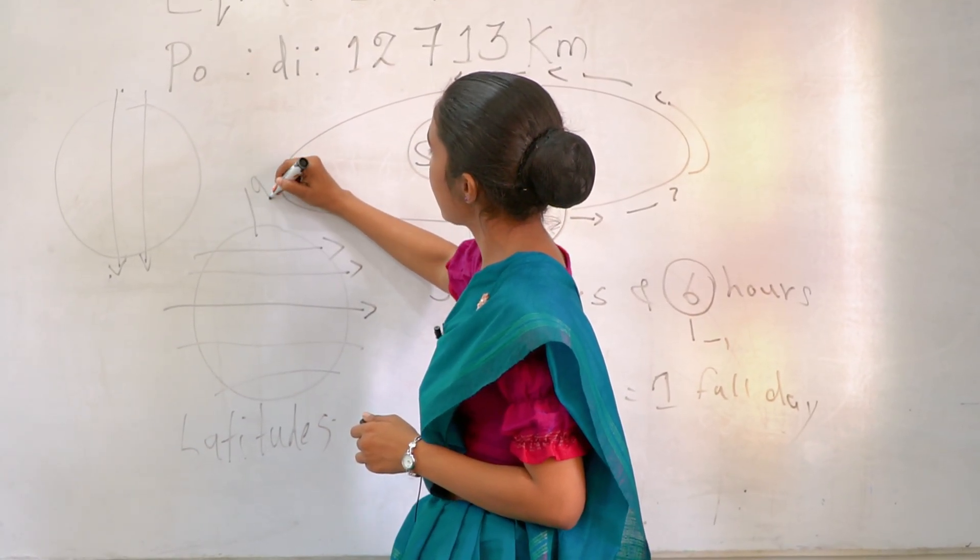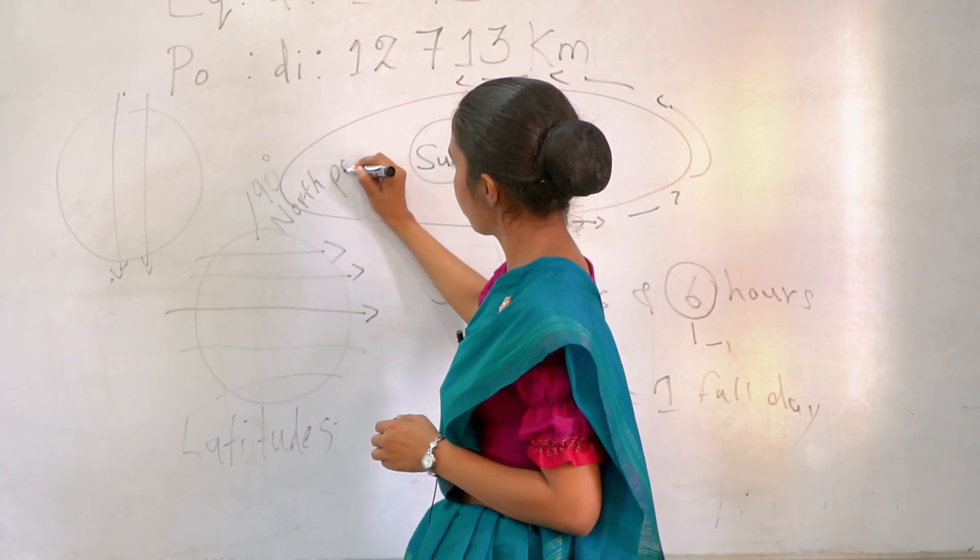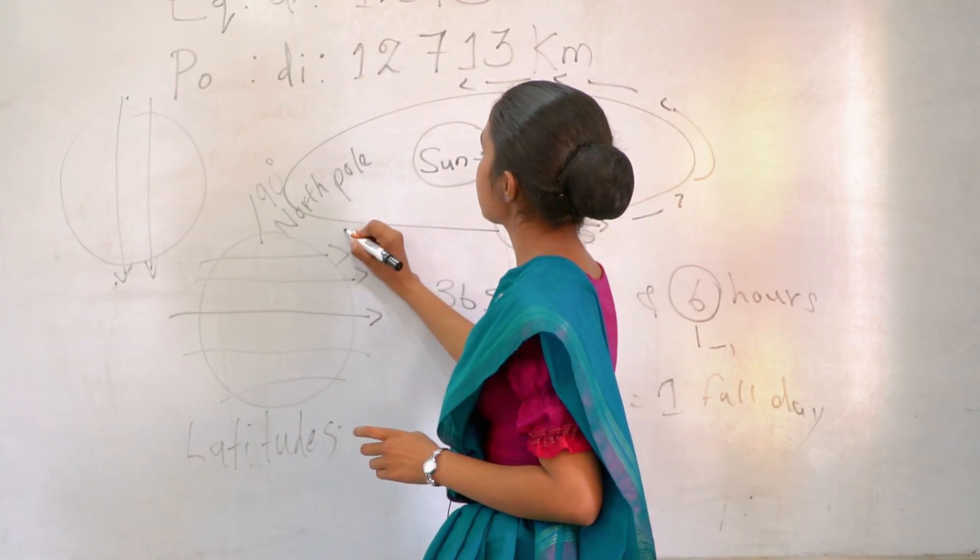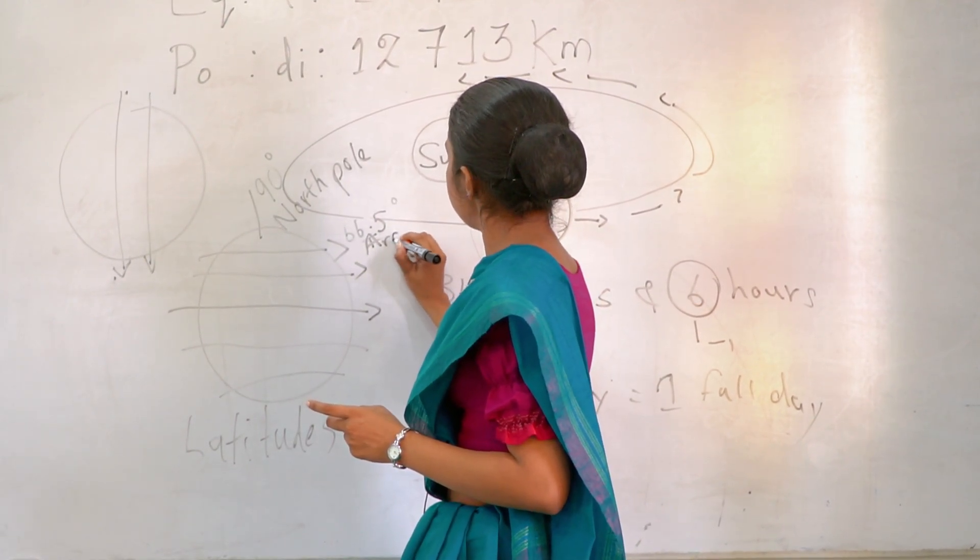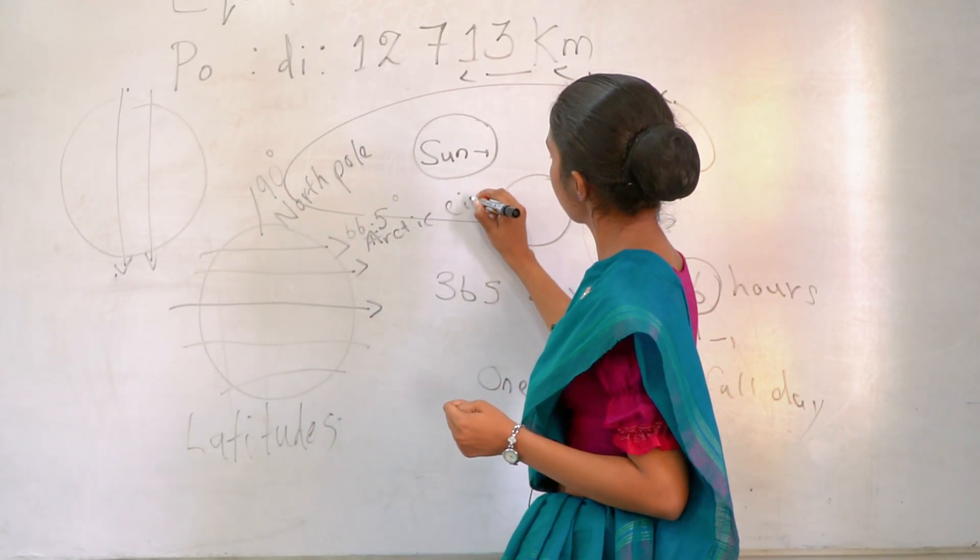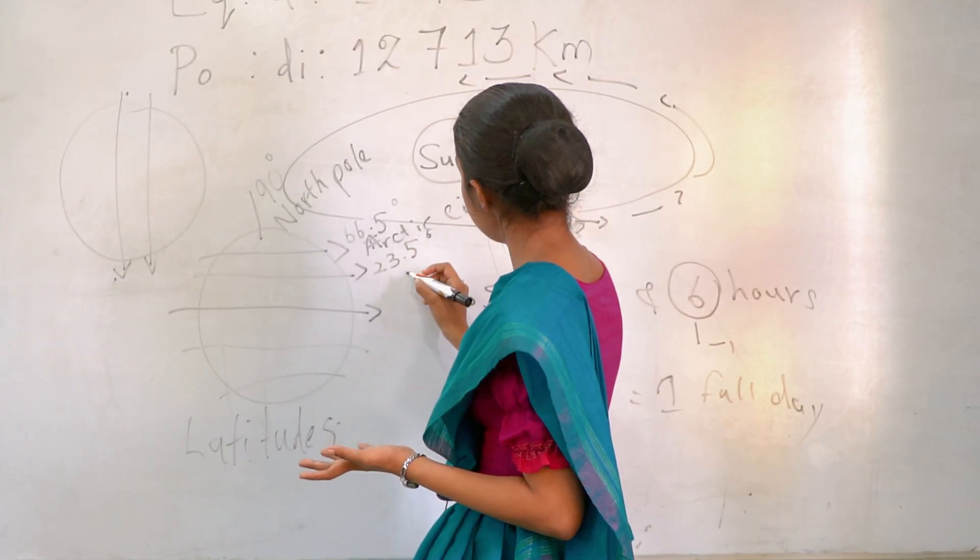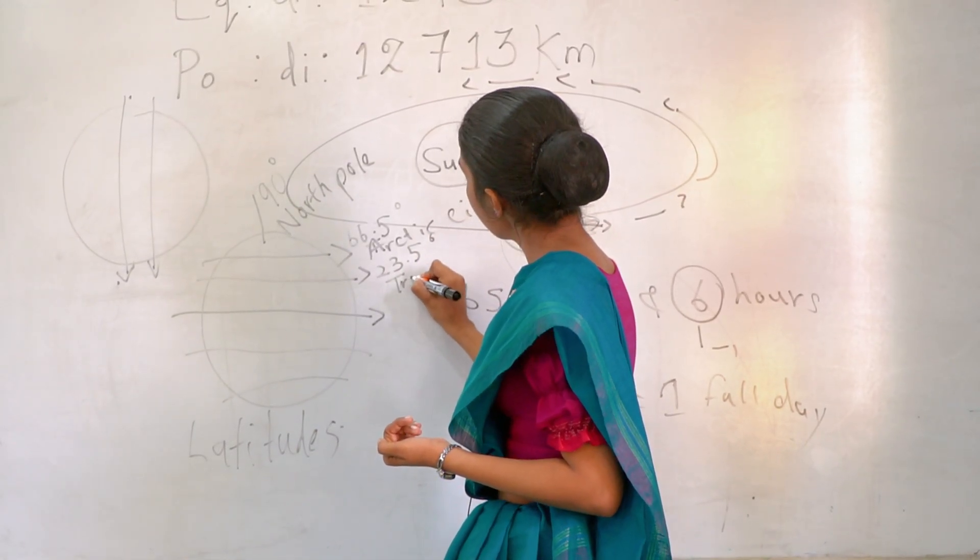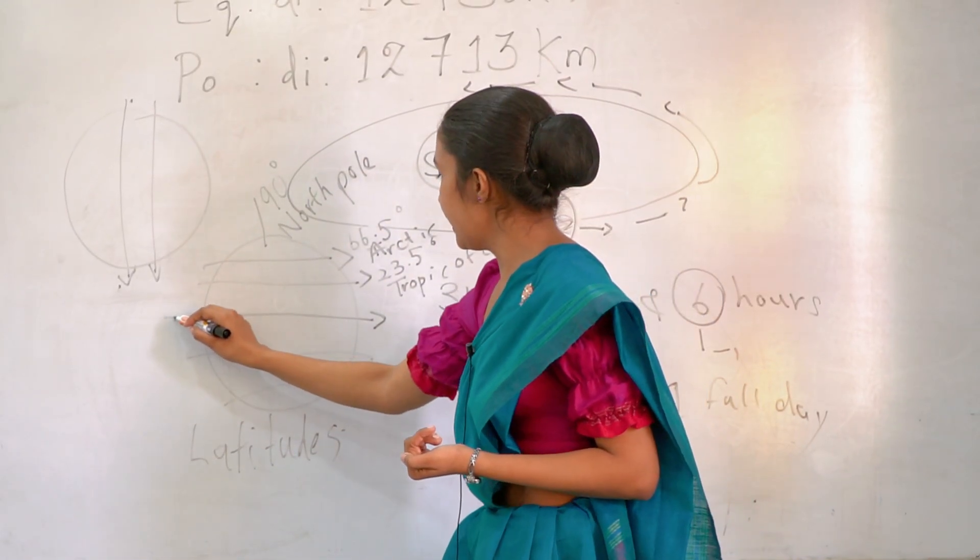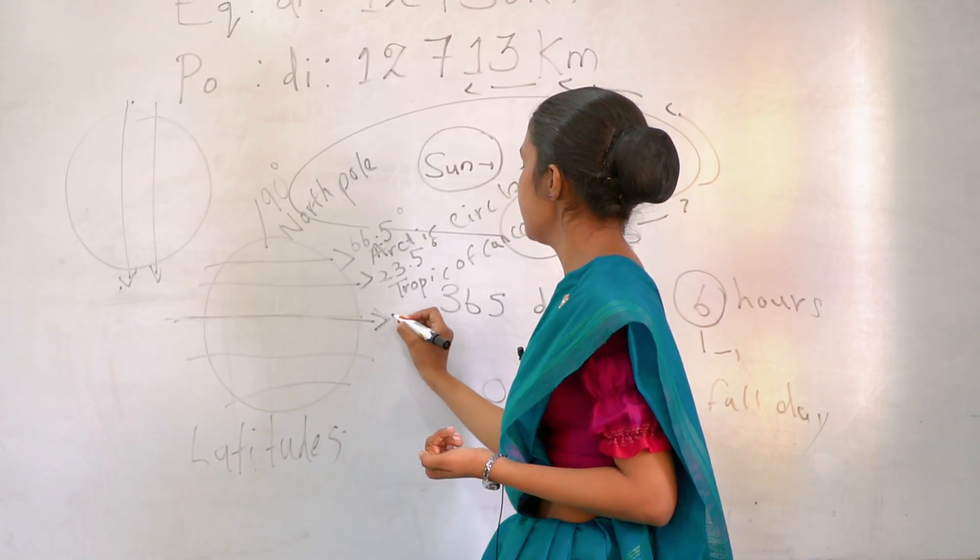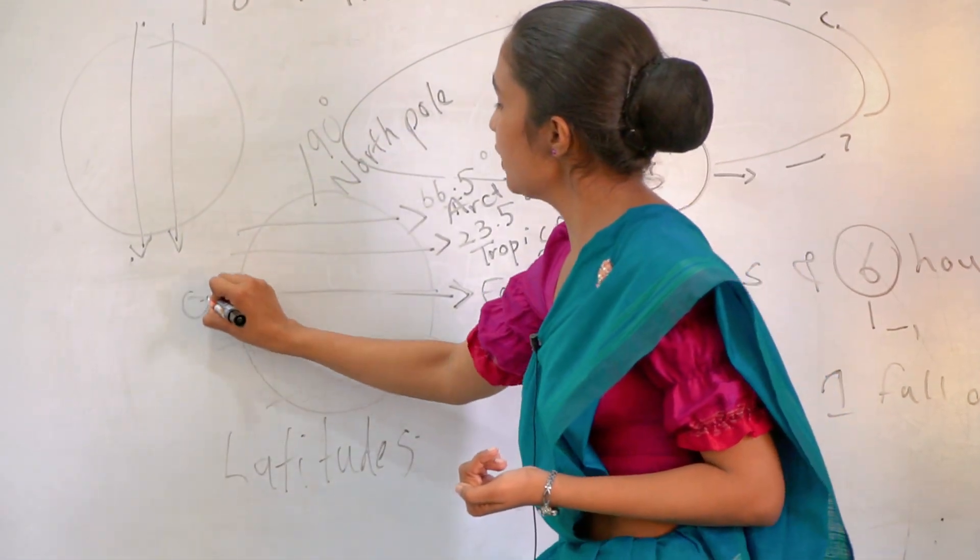Second one, we have 66.5 degrees Arctic circle. And next one, this is 23.5 degrees Tropic of Cancer. And this is the main latitude in the globe. This is called as equator. And this is zero degrees.